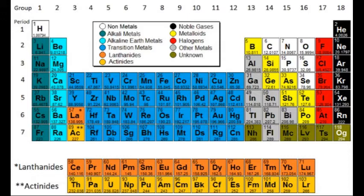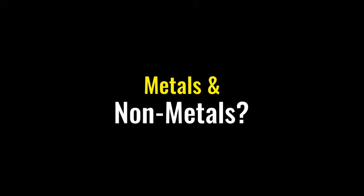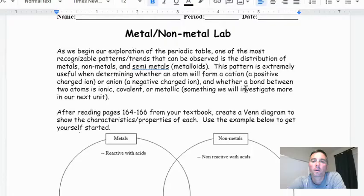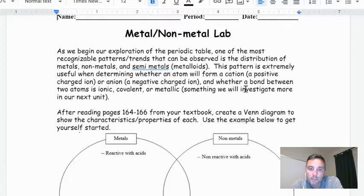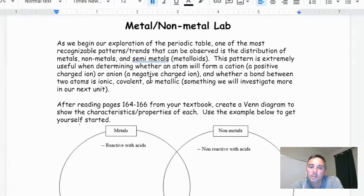So let's start with the easiest one. When I first introduce metals and non-metals, I usually start at the lab, but since we're not in class — and even if we were, we couldn't share equipment — let's just do the lab together. Don't worry if it says honors on here; we'll work through it together. As we begin our exploration of the periodic table, one of the most recognizable patterns is the distribution of metals, non-metals, and semi-metals — or as we'll refer to them, metalloids.